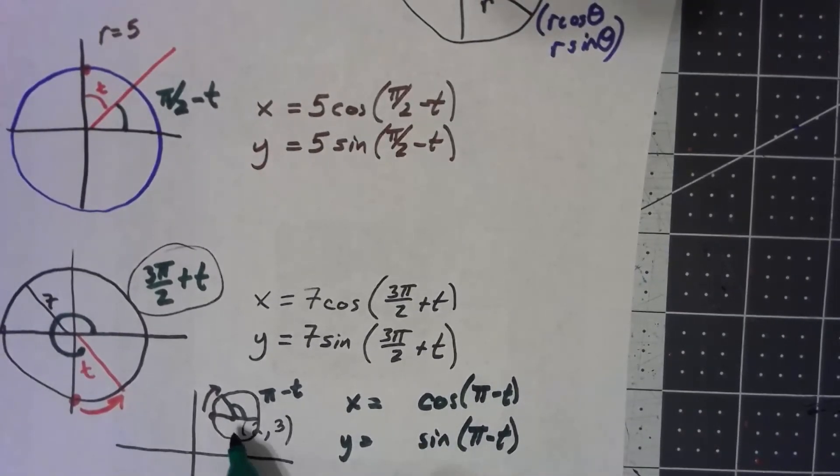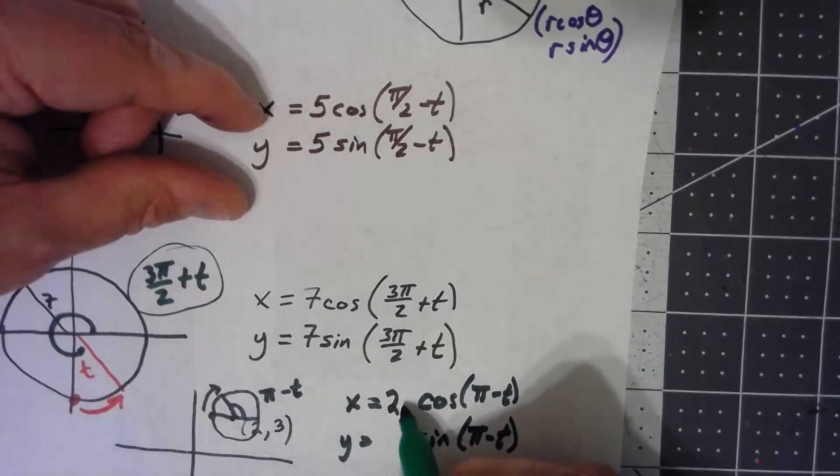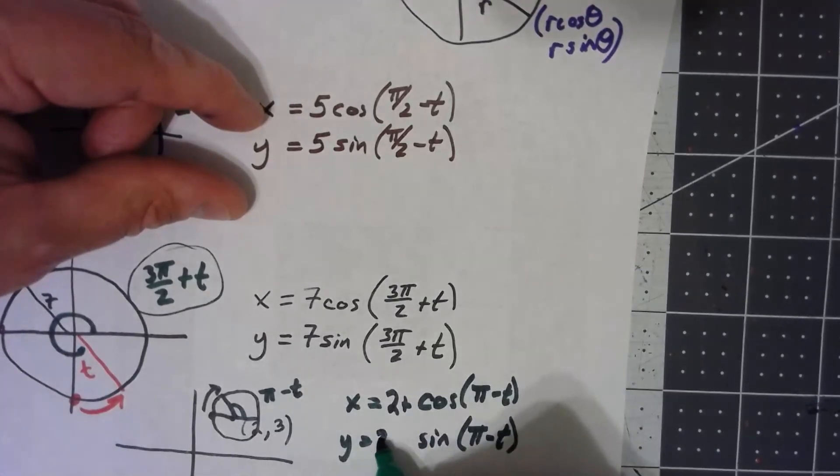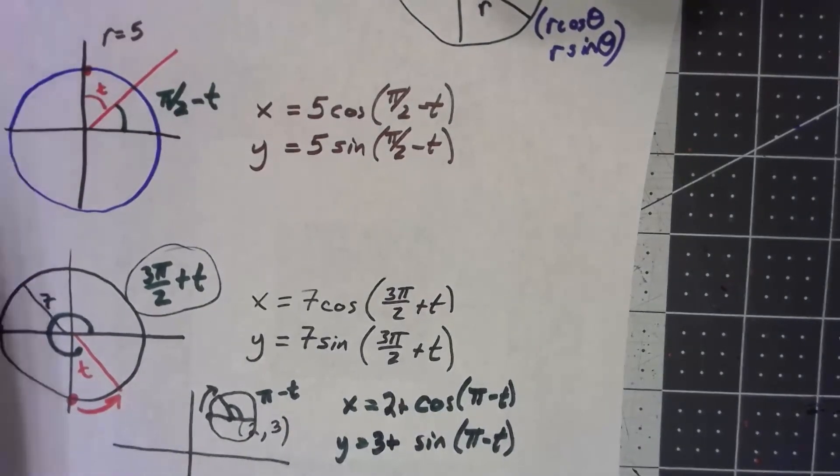But those things are how far away I am from that center. So to get the actual point on the thing, it's just going to be the x center was 2, the y coordinate of the center was 3, and there we go. That would give me the points on that circle.